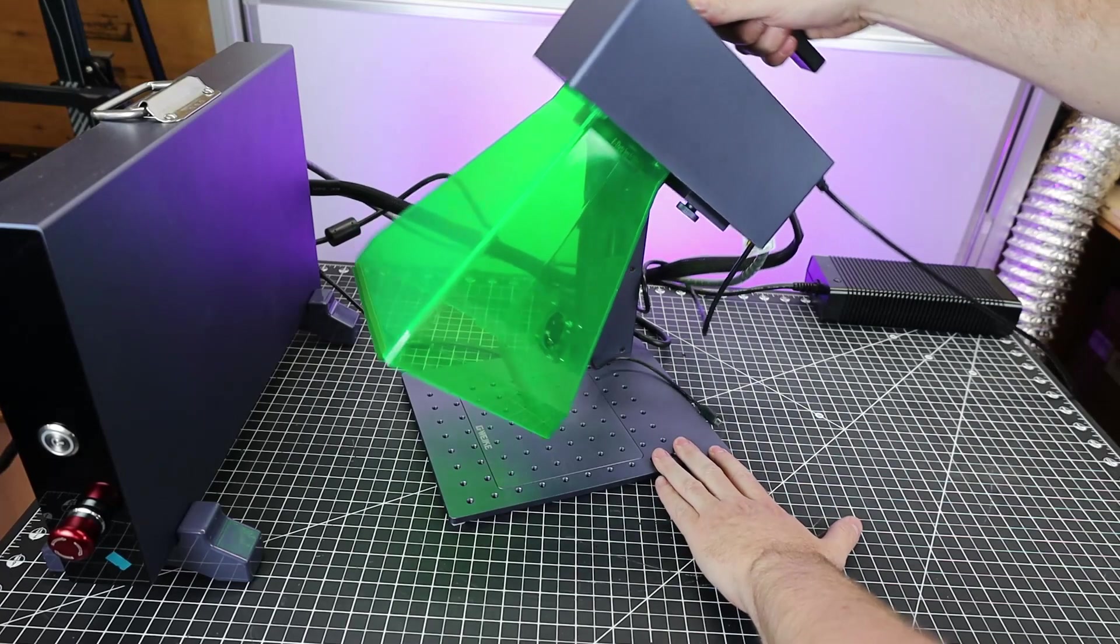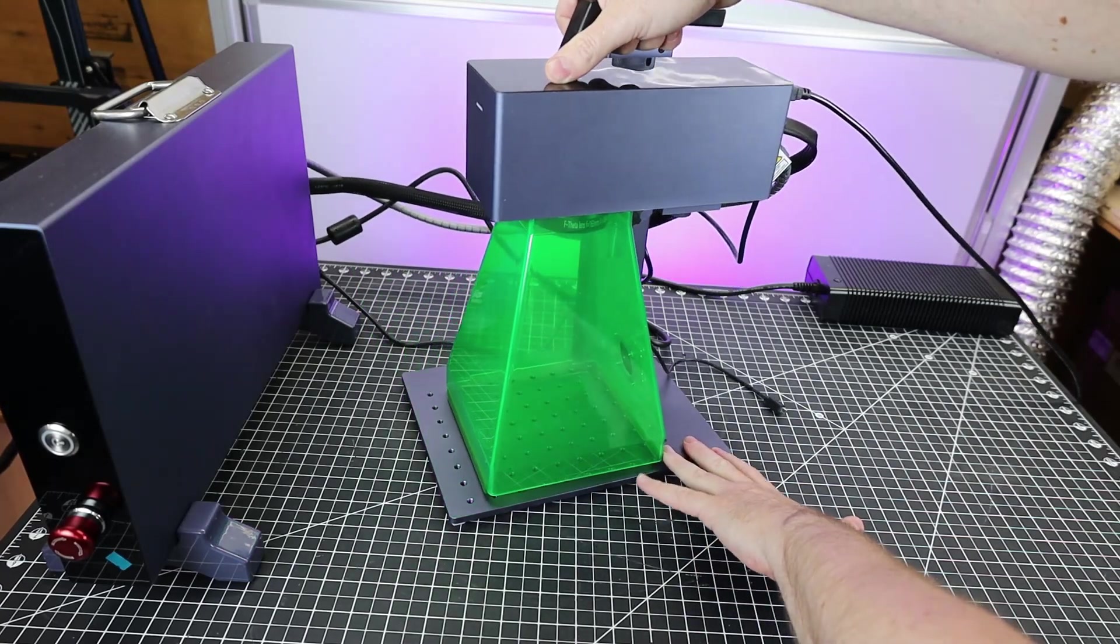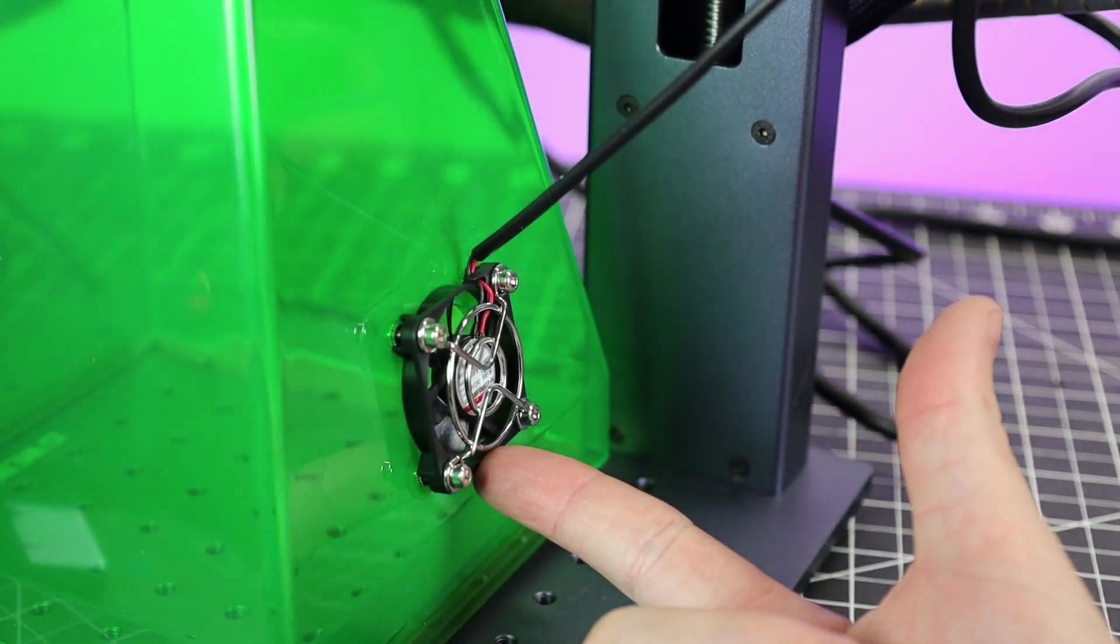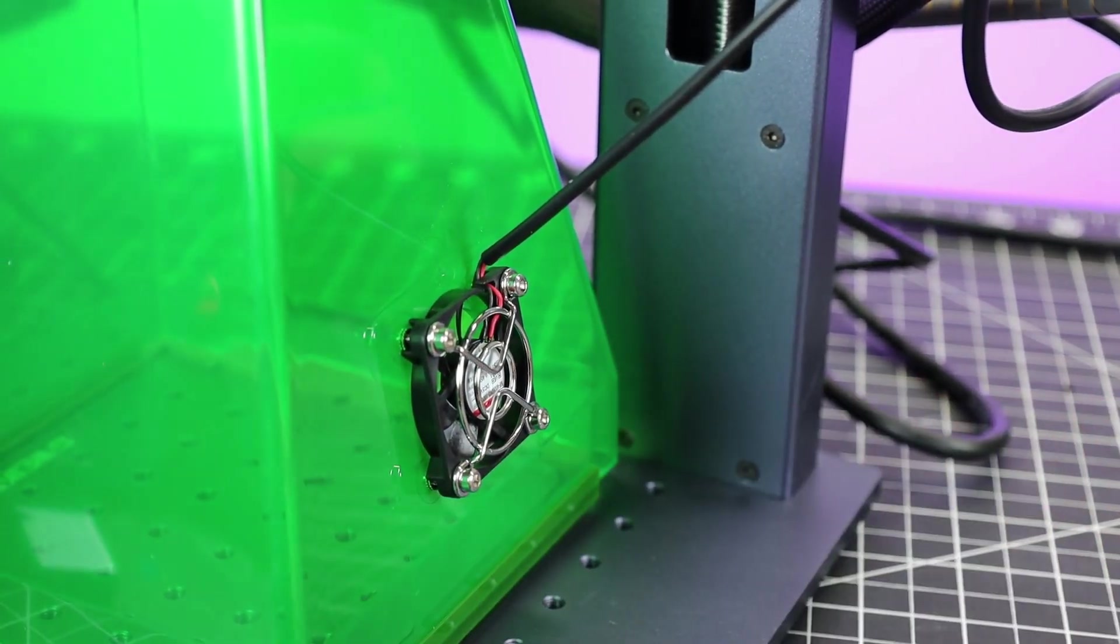And this just kind of clips in place. You can also see that you can angle the laser head quite a bit, and the small enclosure fan just plugs into the back of the laser head. This little fan will just remove the smoke from the chamber, and you're still going to need some sort of ventilation.